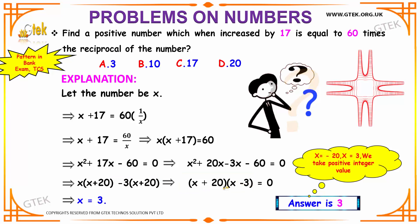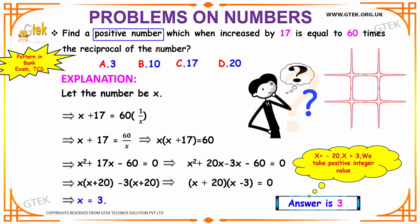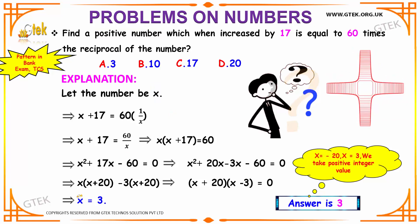From this equation you can get that x has the value as either -20 or 3. So we should take the positive value because we have our number as a positive number. Hence our value of x is 3, which is option A. Hence option A is our answer.